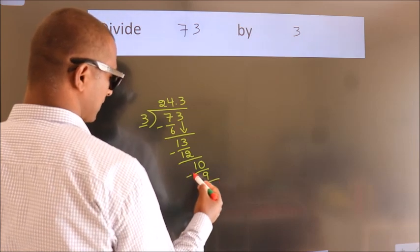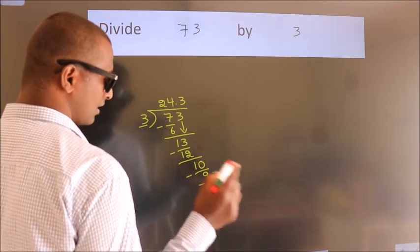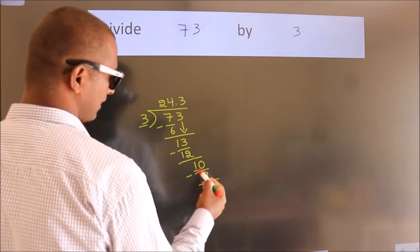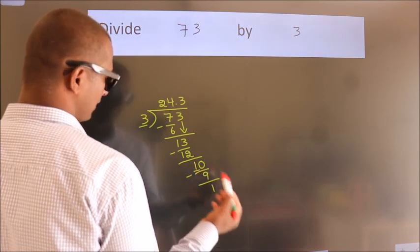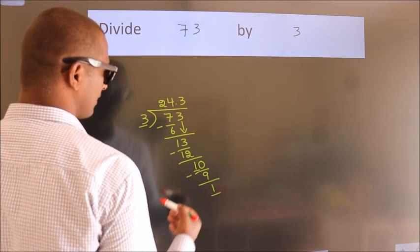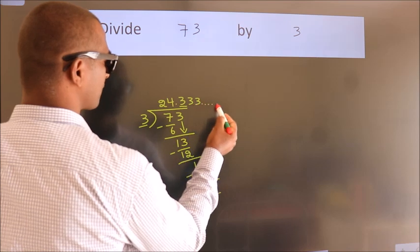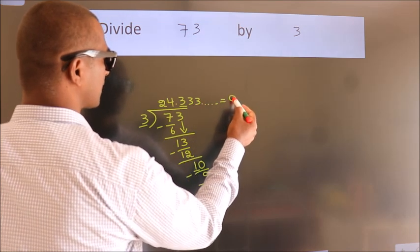Now, we subtract and get 1. Now, you observe, we had 1 here and we got 1 again. That means this number keeps on repeating. So, this is our quotient.